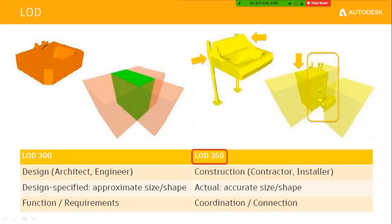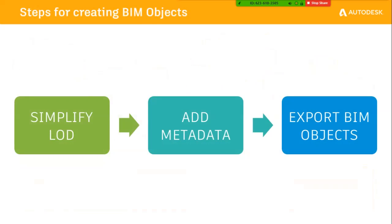Now let's get into how to create BIM objects. The steps are: first, we need to simplify the model. As previously discussed in the CAD vs BIM comparison, we can't carry too much information from our manufacturing model directly to a BIM model. We provide only the necessary information, and then add that information as metadata.